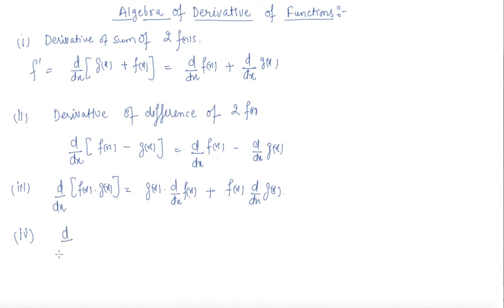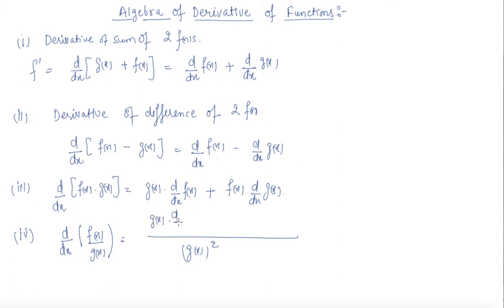Now for d/dx of f(x)/g(x). The formula has g(x) squared in the denominator, and in the numerator: g(x) · d/dx f(x) minus f(x) · d/dx g(x). This is the formula to find the differentiation of the division of two functions.